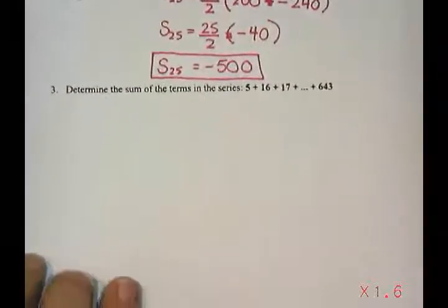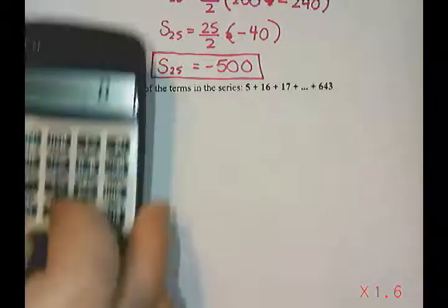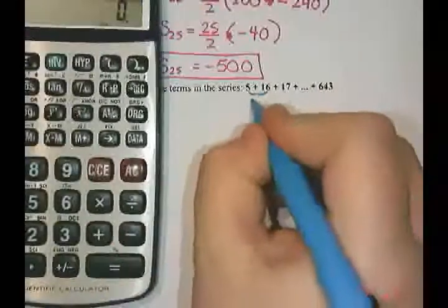So our last one is we want to determine the sum of the terms in the series 5 plus 16 plus 27 all the way up to 643. So first thing you should always do is try to figure out your pattern. So is it arithmetic? Is it geometric? So to get from 5 to 16, if I do 16 take away 5, that is 11.